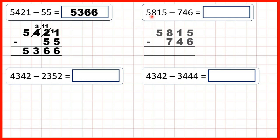Now 5,815 minus 746. Again we've got our digits lined up on the right hand side, and we start with our ones column, so with 5 minus 6. But because 6 is larger than 5, we need to go to the left, 1 less, 1 in front — so exchange one of our tens for 10 more ones. That means we have 15 ones. So if we take away 6, we have 9 as the ones digit of our answer.